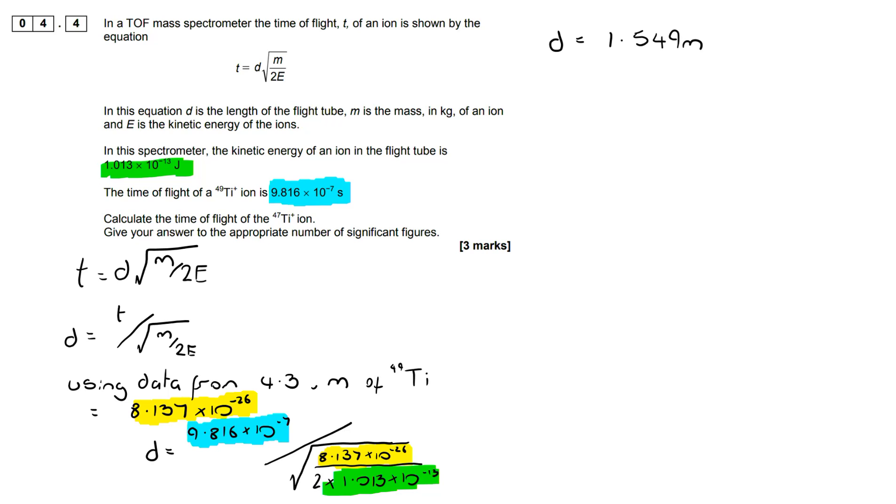At this point I've almost got to go back to the beginning because I now need to use the information that we have there to actually consider the time of flight for the titanium-47. So I know that I can work out the mass. We actually did that—that was the whole of 4.3 doing it for titanium-49.